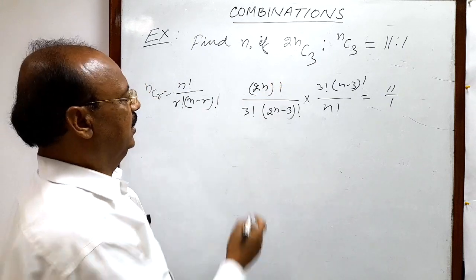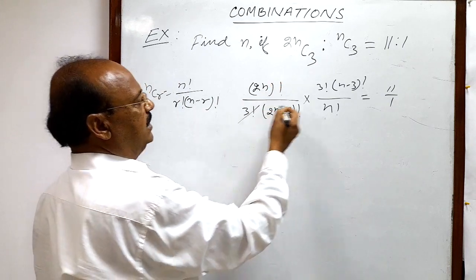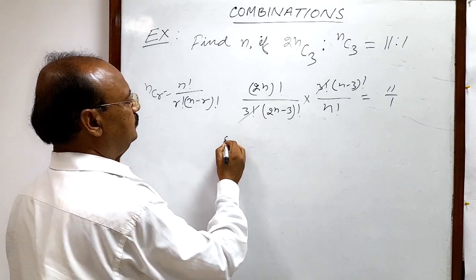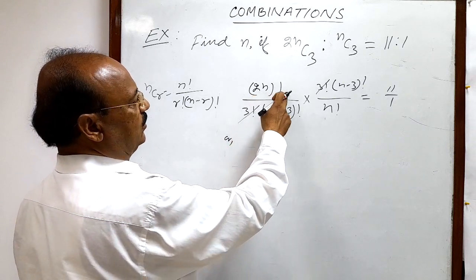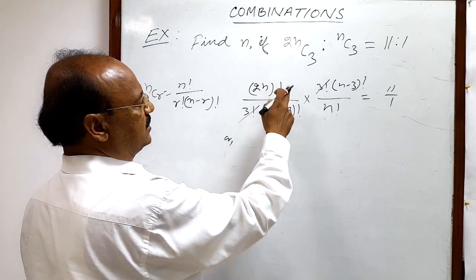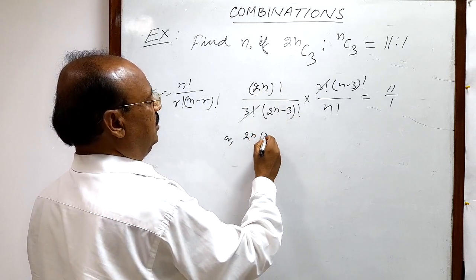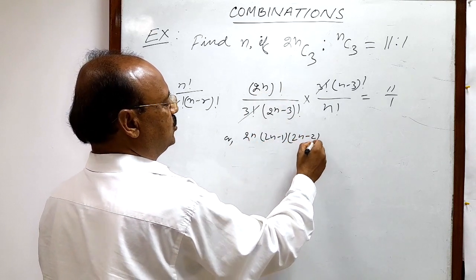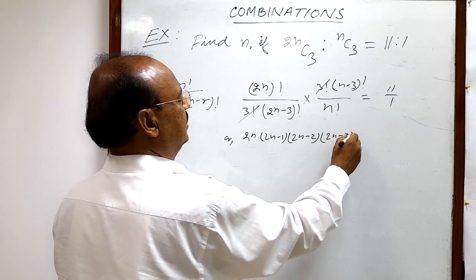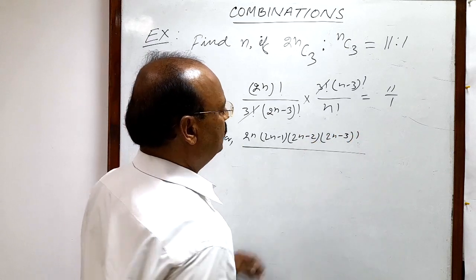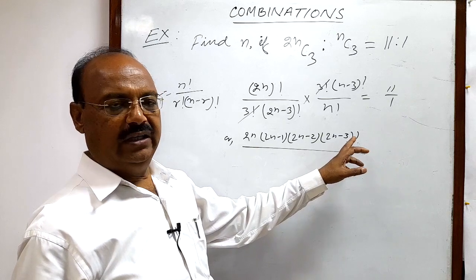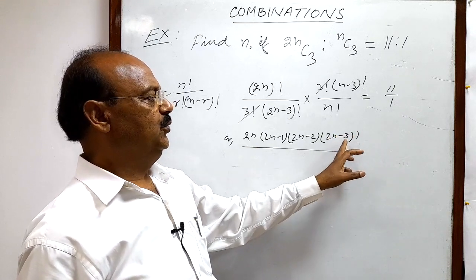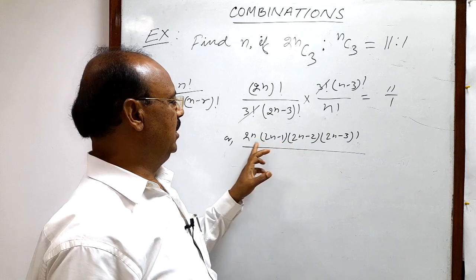Now let us simplify. The 3 factorial will be cancelled out from numerator and denominator. The 2n factorial can be expanded as 2n into 2n minus 1 into 2n minus 2 into 2n minus 3 whole factorial, because 2n minus 3 whole factorial is a continued multiplication from 1 to 2n minus 3, which has been continued up to 2n.